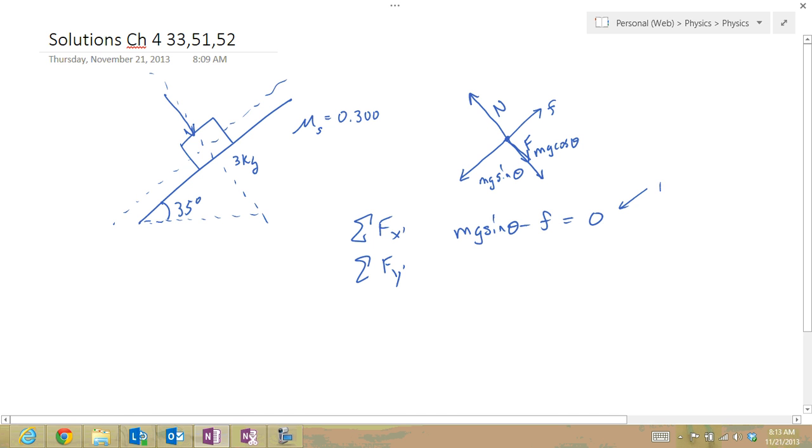And it's 0 because ma, normally it would be ma, but a is equal to 0 because it's static, not moving.